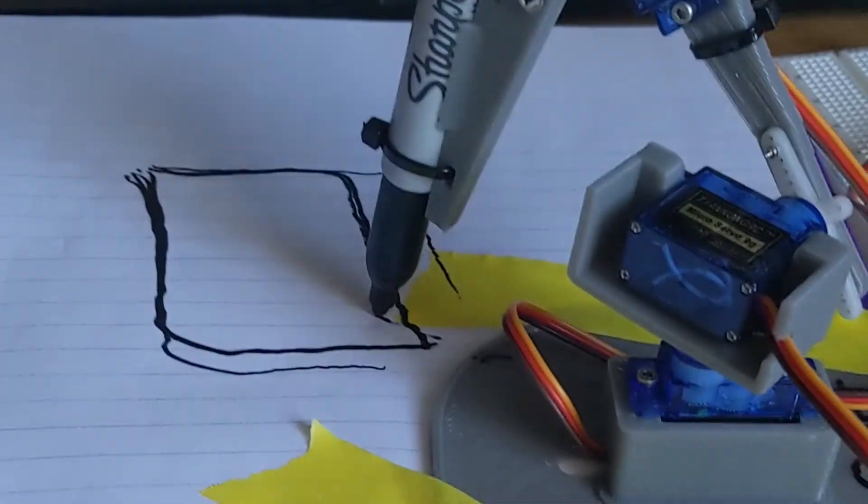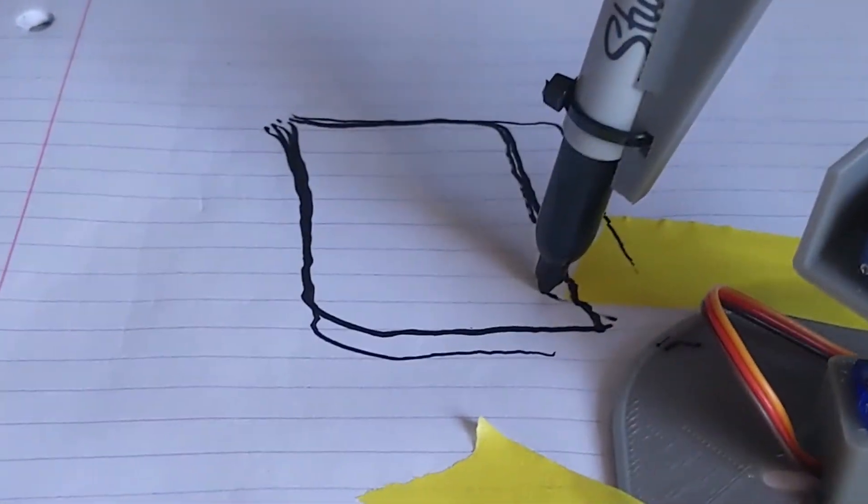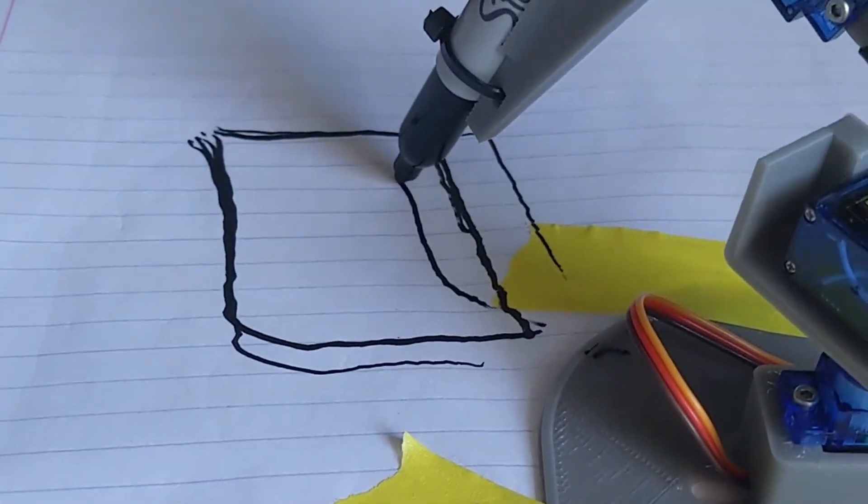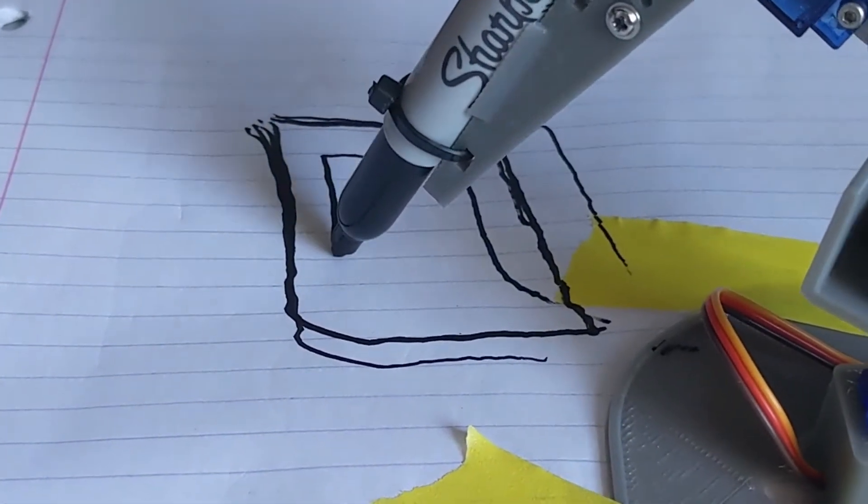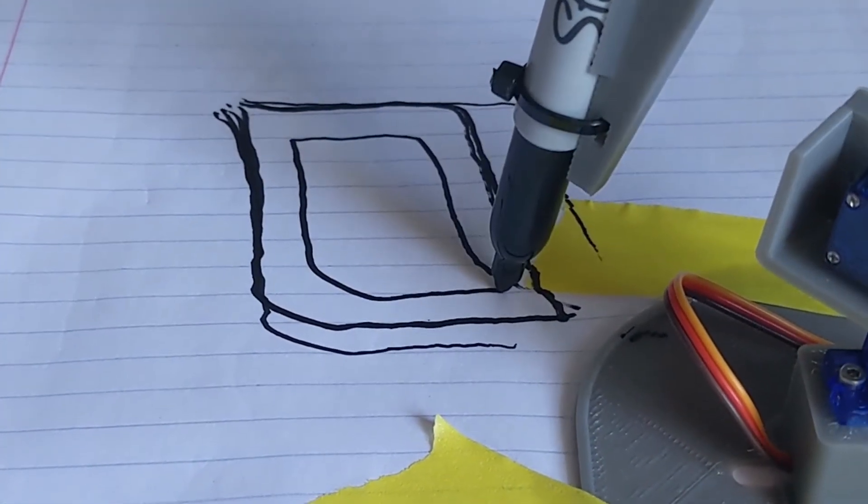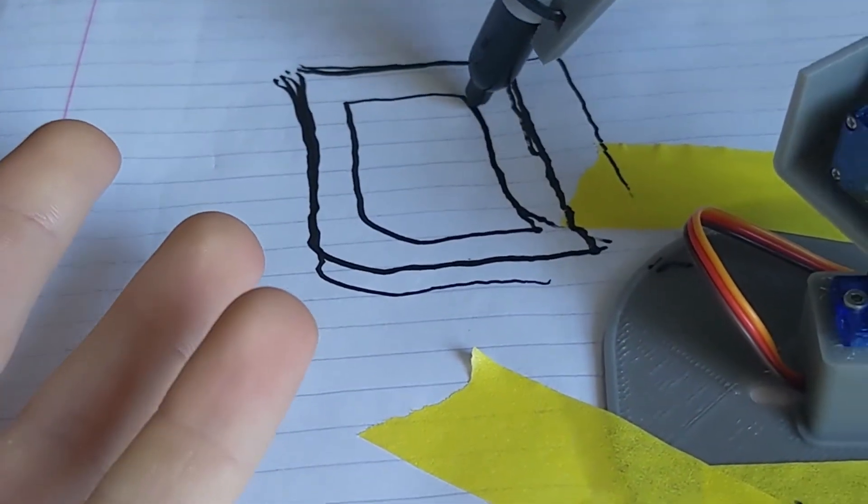Since I had such bad luck drawing circles, I decided to keep it simple and just draw a square this time. I held my breath, clicked go, and sure enough, it drew something that resembled a square. Even though it wasn't exactly the best square, it was a hell of a lot better than the circles I was drawing just a few hours ago.